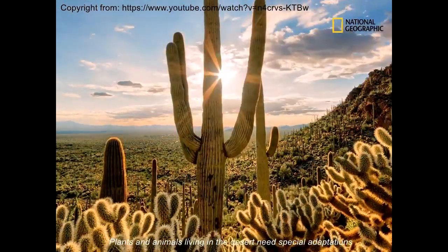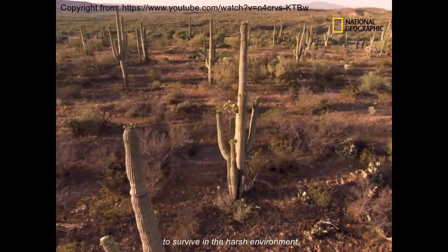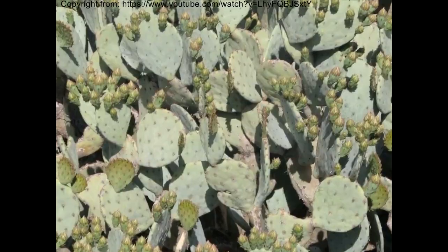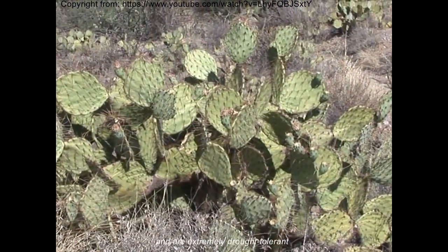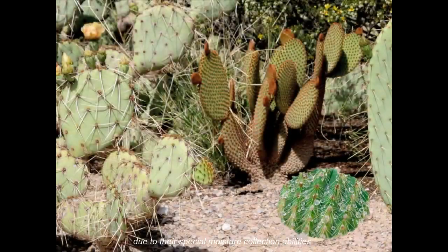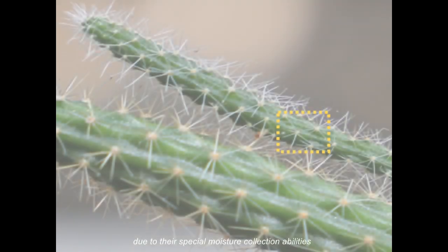Plants and animals living in the desert need special adaptations to survive in the harsh environment. Many cactus species live in arid environments and are extremely drought-tolerant due to their special moisture collection abilities.